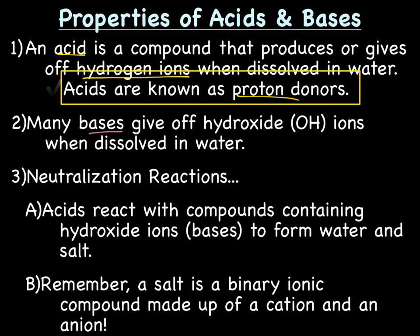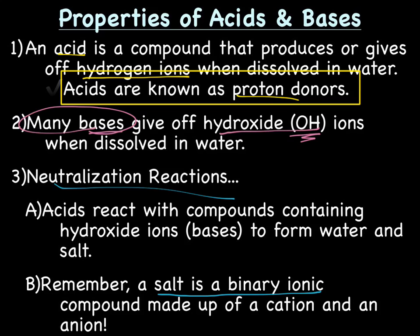Many bases give off hydroxide ions — OH ions — when dissolved in water. We'll talk later about why I say many bases. For now, we can think of bases as releasing hydroxide or OH ions when dissolved in water. A neutralization reaction is when acids react with bases or compounds containing hydroxide ions, they form water and salt. Keep in mind that salt is a binary ionic compound made up of a cation and an anion.